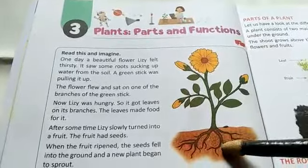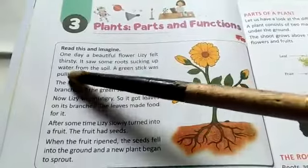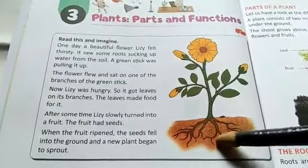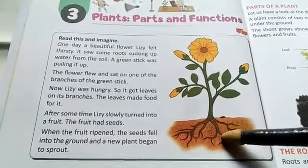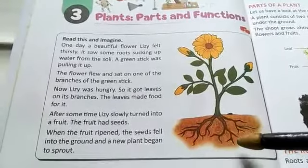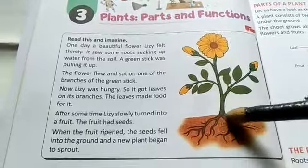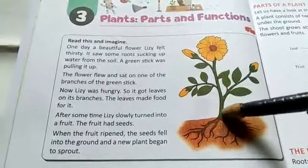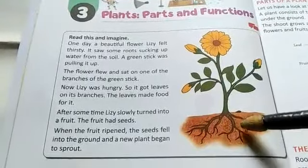The flower's name was Lizzie. One day Lizzie felt thirsty, so she saw some roots sucking up water from the soil. As the roots were sucking water from the soil, there was a green stick pulling the water upward.